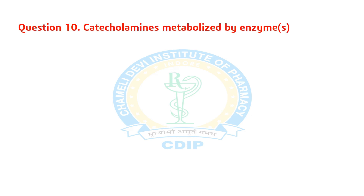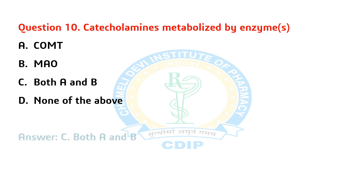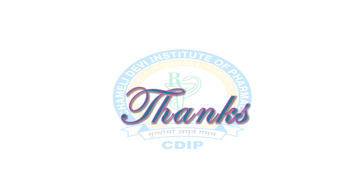Question 10. Catecholamines are metabolized by which enzyme(s)? A) COMT. B) MAO. C) Both A and B. D) None of the above. Answer: C. Both A and B.